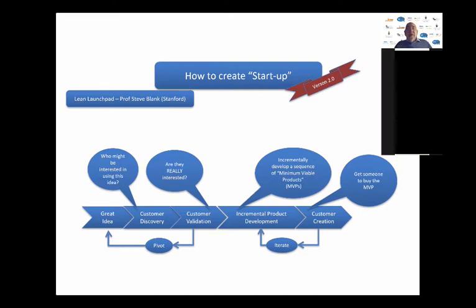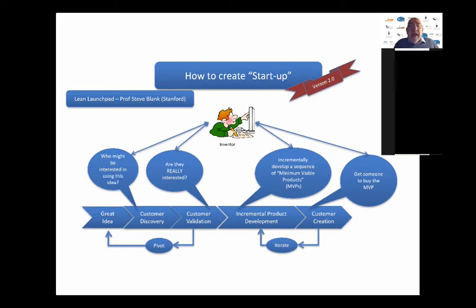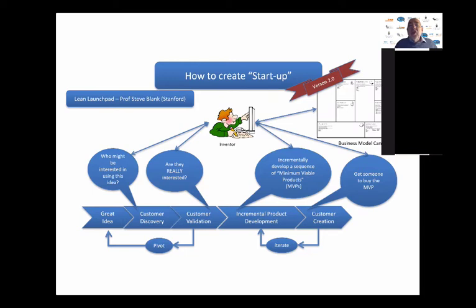You then iterate — going through more and more sophisticated versions of your product till you get to where you were going. The key thing is that every step, the inventor is involved. In the classical linear model, the inventor throws his or her invention over the wall and someone else tries to take it to market. Here, the inventor is engaging in every step and helping to modify and pivot the invention. The tool used in this lean startup is called the business model canvas.